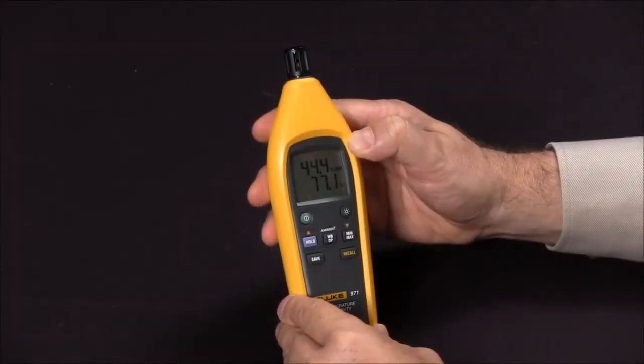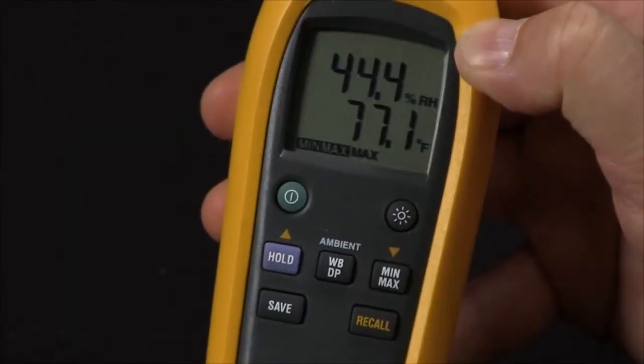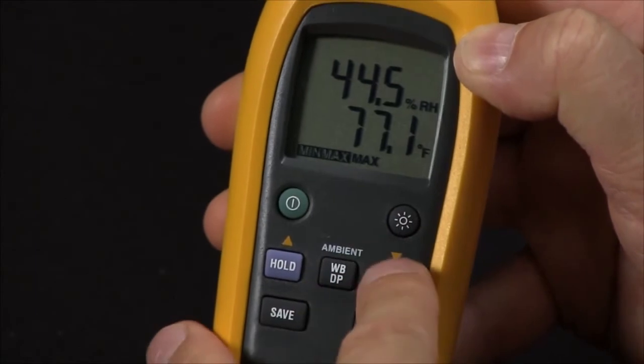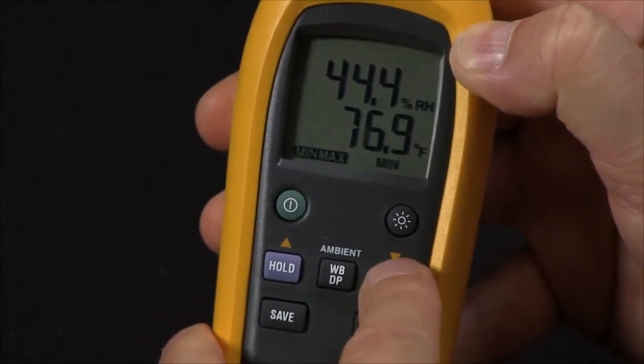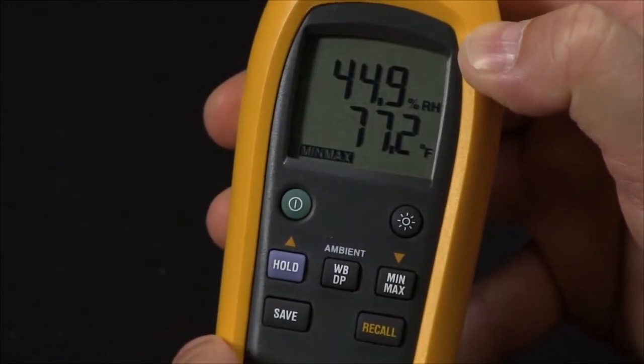We do have a min-max feature on the 971 as well. Simply press this button, you will have your min-max reading on the screen. And to sequence through, press the button once to get your minimum reading. Press it once again to get your average. And once again to get your maximum reading.